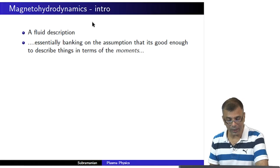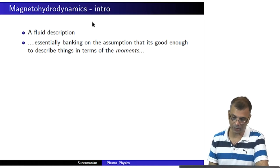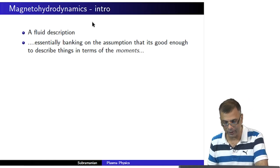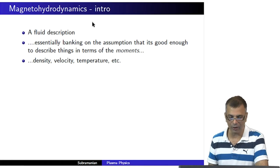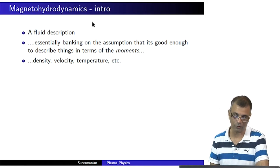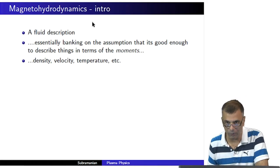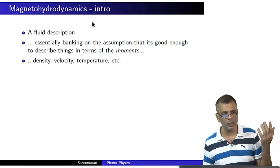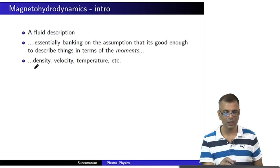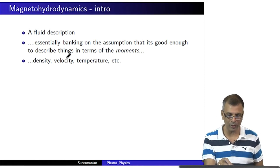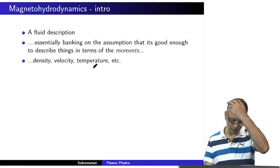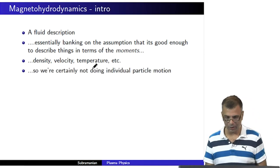All the usual approximations that we made to define fluids hold here too. What that means is that we are essentially banking on the assumption that it is good enough to describe things in terms of moments like density, velocity, temperature, and so on. We are considering only the moments of the distribution function: density is the 0th moment, velocity is the first moment, temperature is related to the second moment.